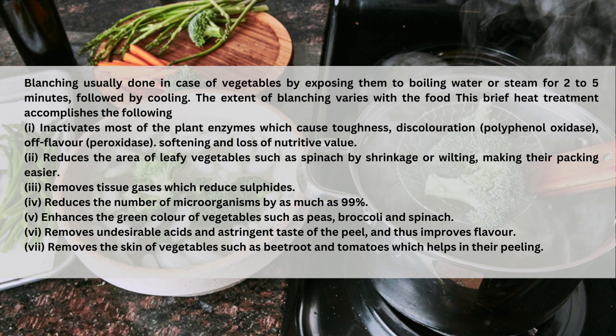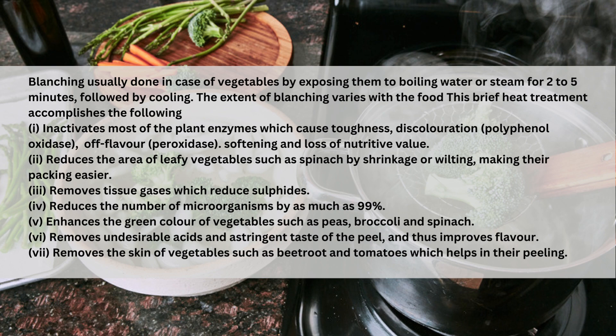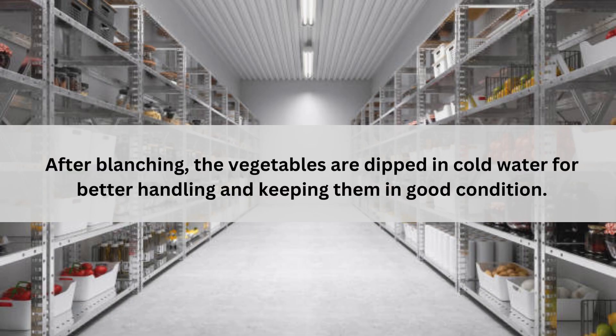Blanching reduces the volume of leafy vegetables such as spinach by shrinkage, making packaging easier. It removes tissue gases, reduces the number of microorganisms by as much as 99%, and enhances the green color of vegetables such as peas, broccoli and spinach. It also removes undesirable acid and astringent taste of fruit, and removes the skin of vegetables such as tomatoes. After blanching, the vegetables are dipped in cold water for better handling and to keep them in good condition.